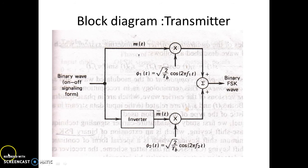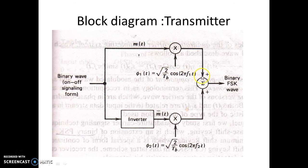The block diagram of the transmitter: the incoming signal is a binary wave using on-off signaling — either a plus one or zero, depending on whether the incoming symbol is a one or a zero. When the symbol is one, it goes to a multiplier which multiplies it with root(2/T_b) × cos(2πf_1 × t), producing frequency f_1. The same signal goes to an inverter and becomes zero, which then gets multiplied with the carrier of frequency f_2.